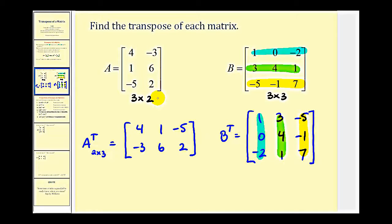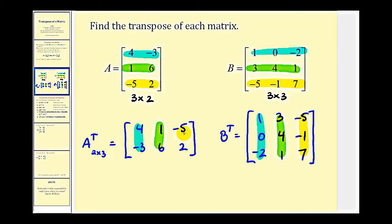To emphasize this: row one became column one, row two became column two, and row three became column three. The same applies to our first example — row one to column one, row two to column two, and row three to column three.